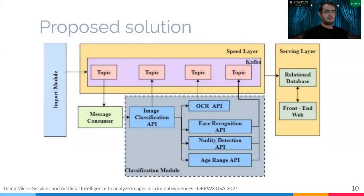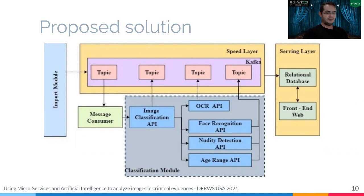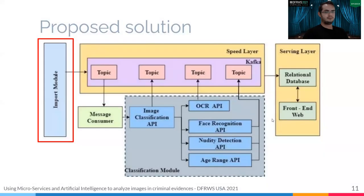The system is based on a lambda architecture, which is a data processing architecture designed to handle a massive quantity of data by taking advantage of both batch processing and stream processing methods. We have an import model that introduces all data into the system, a speed layer used to process the data in a distributed and parallel way, a classification model that provides intelligent solutions for image detection and classification, and a serving layer with mechanisms for data storage and visualization.